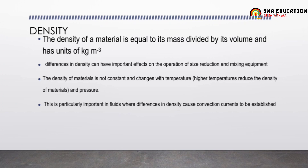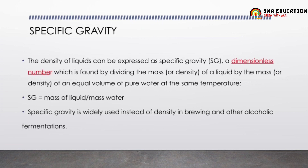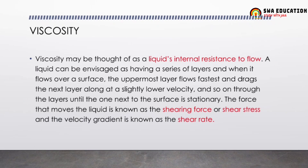Key points: density is mass divided by volume; it is used in size reduction and mixing equipment; it is not constant and changes with temperature. Bulk density includes both the volume of food and the volume of air, whereas porosity only takes the fraction of volume of air. Specific gravity is the density of liquids, always expressed as a dimensionless number.